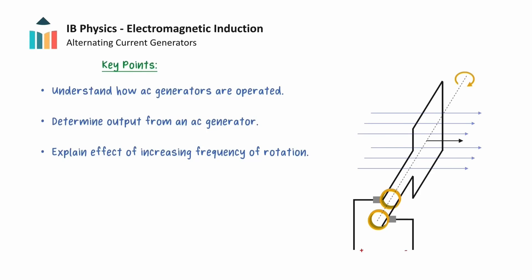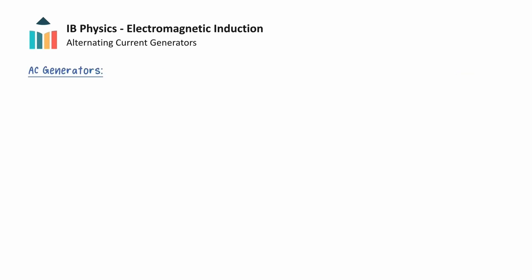This video will explore the mechanisms behind alternating current generators. We will explore how these generators are used to produce energy, and we will examine their output using Faraday's law of induction. One important application of electromagnetic induction is the AC generator, which is used to convert mechanical energy into electrical energy.